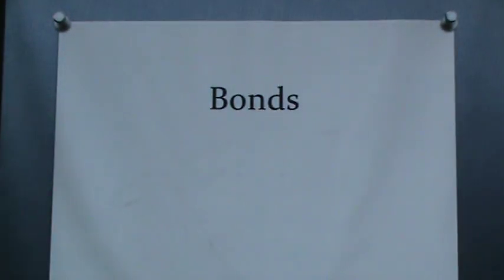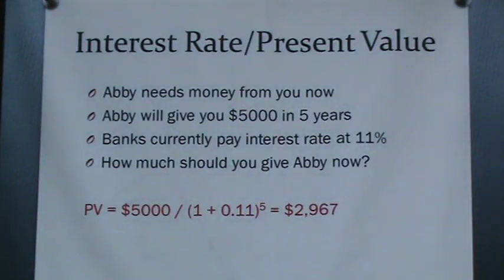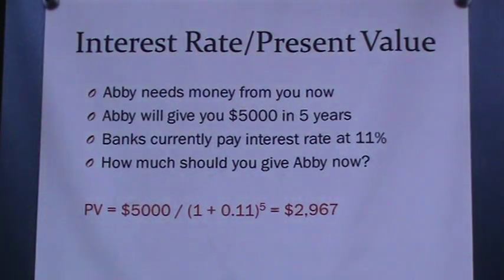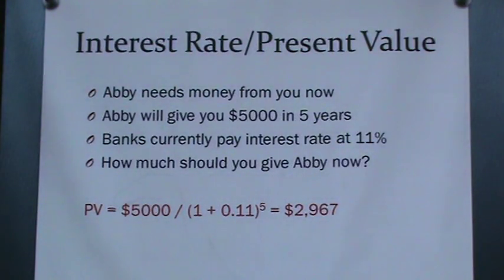We're going to talk about a type of investment called a bond. An investment is basically an agreement where you pay money at the beginning phase and receive money at the ending phase — once you start receiving money, you don't have to pay any more. A bond is a special type of investment where it keeps producing a constant payment stream, which I sometimes refer to as a fixed income investment.